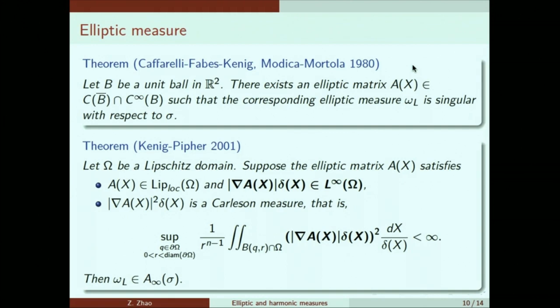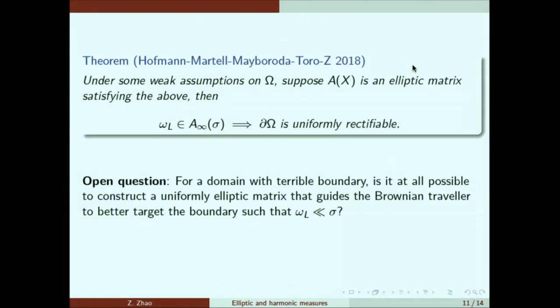The behavior of harmonic measure is also stable in some sense under this perturbation. So if two elliptic matrices, their difference satisfies some type of Carlson measure condition, then the behavior would be preserved.